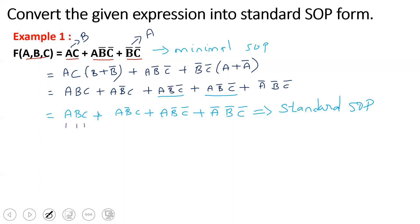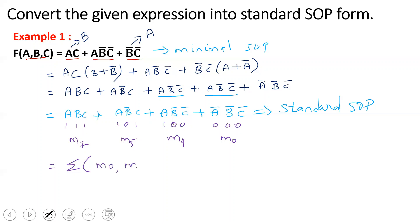For the previous video, detailed experiments are referred to in the link in the description. Now, representing in minterm notation: A=1, B=1, C=1 gives minterm M7. A=1, B=0, C=1 is M5. A=1, B=0, C=0 is M4. A=0, B=0, C=0 is M0. So this is written as summation of M0, M4, M5, M7.